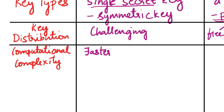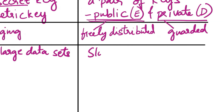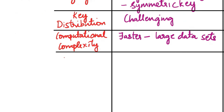The next aspect of comparison is computational complexity. Symmetric cryptography is generally faster for both encryption and decryption, making it suitable for encrypting and decrypting large data sets. Asymmetric cryptography is slower compared to symmetric due to complex mathematical operations, especially for encrypting or decrypting large data.